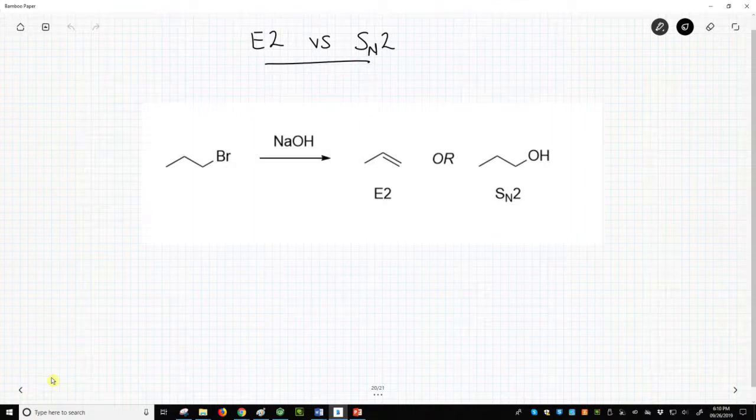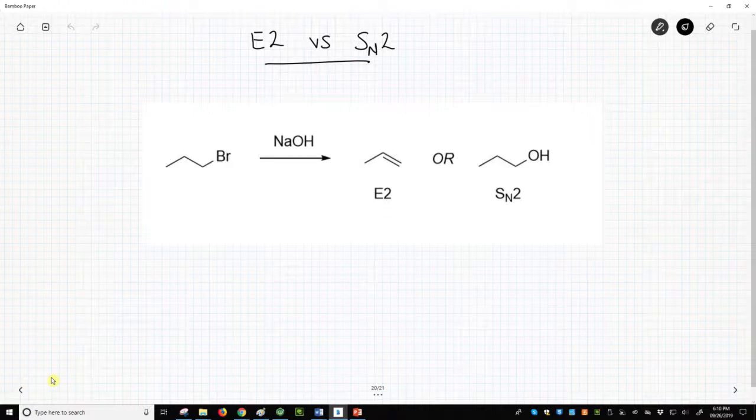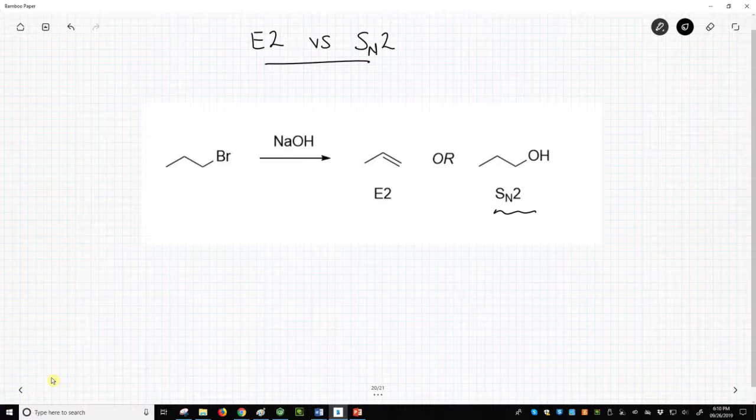You and your friend, who love to debate chemistry, disagree on what the product will be. Your friend says that NaOH is a good nucleophile, and when paired with a primary halide, it will do an SN2 reaction to give an alcohol product.